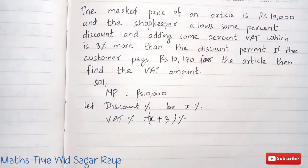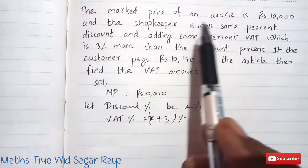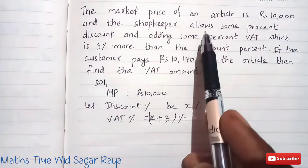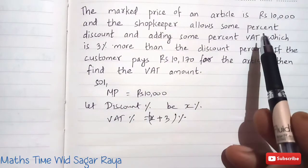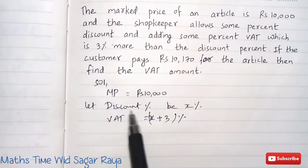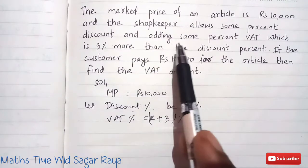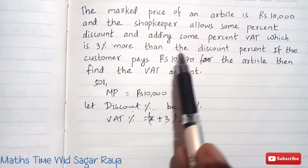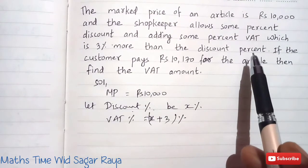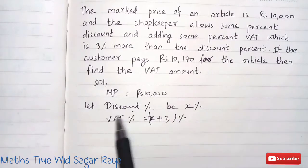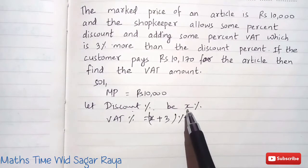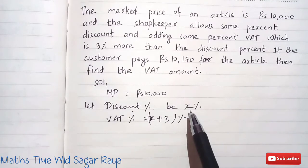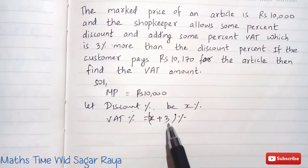Without any delay let's do the solution. In the screen you can see the question: the marked price of an article is Rs 10,000, so mark price equals 10,000. The shopkeeper allows some percent discount — we don't know the discount, so let discount percent be X percent. The VAT percent is 3% more than the discount percent, so VAT percent equals X plus 3 percent.